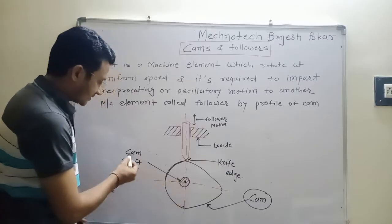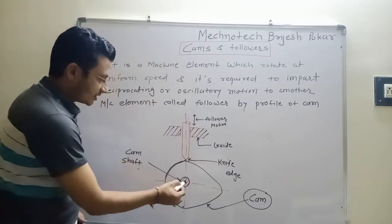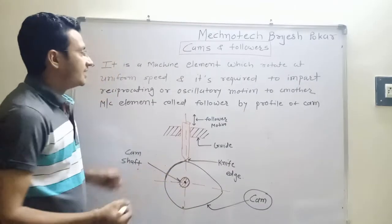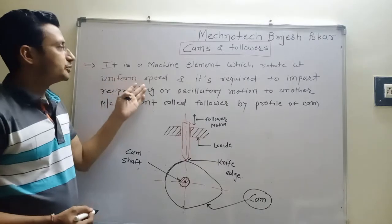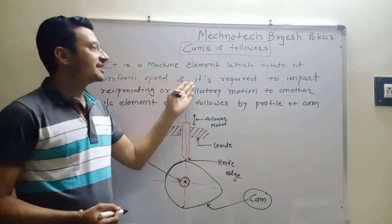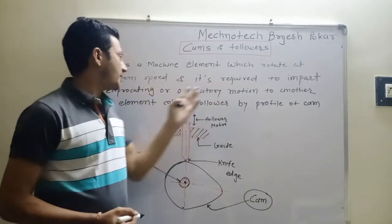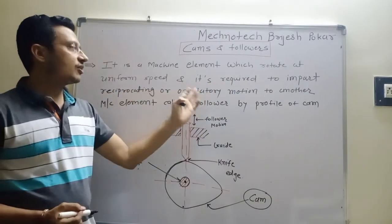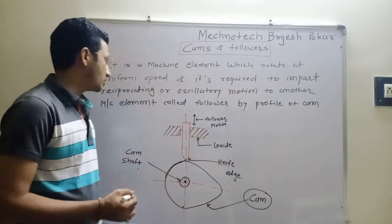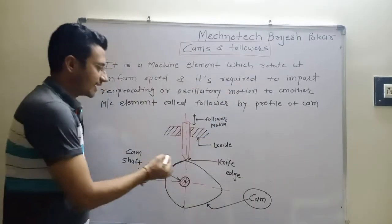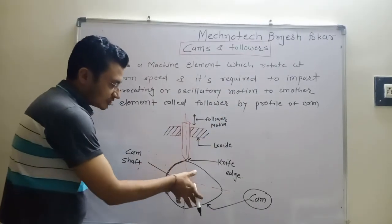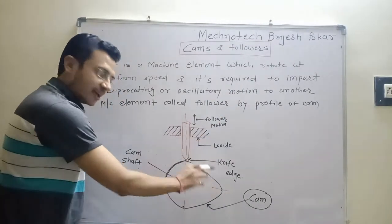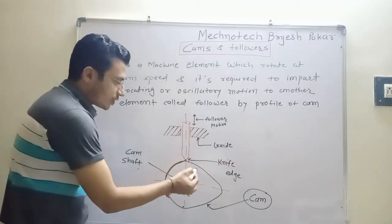You can see this is a camshaft, which rotates at uniform speed. It is required to impart a reciprocating or oscillating motion to another element. As the cam rotates, the follower moves up and down.